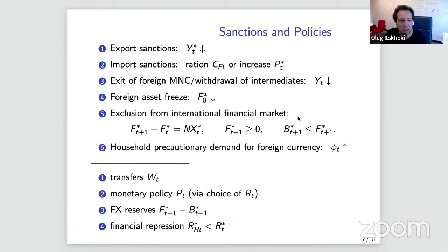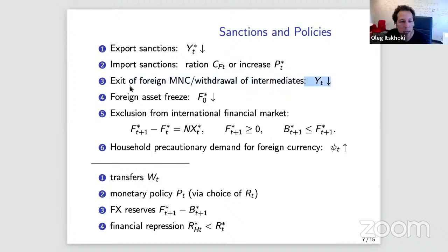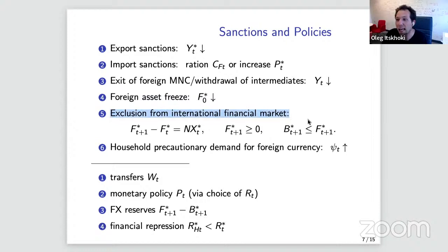Now to the analysis. Starting with a Cobb-Douglas utility warm-up, which makes equations easy, working in steady state so the euler equation is satisfied automatically. Sanctions could be on exports reducing y-star, on net foreign assets, or on imports. There could be a domestic recession. There could be a freeze of foreign assets — which happened in the first week of the war — and exclusions from international financial markets, where you lose interest income and can only hoard foreign currency from trade surpluses.